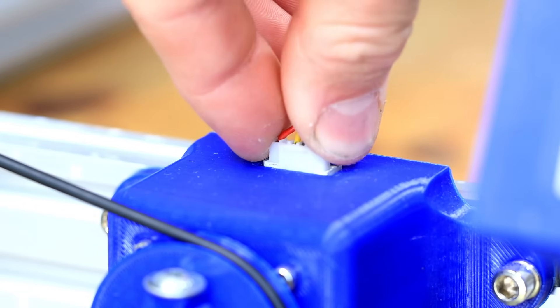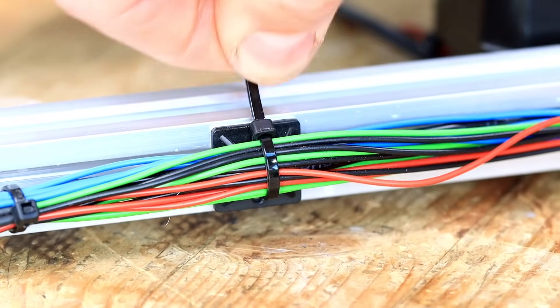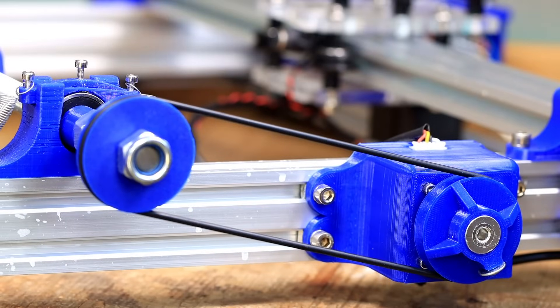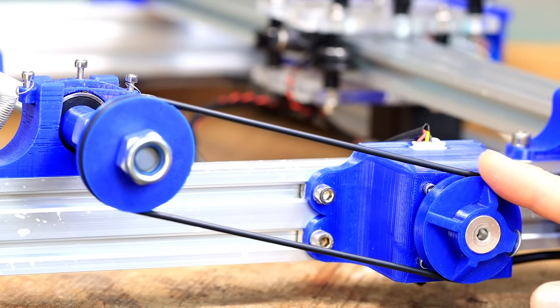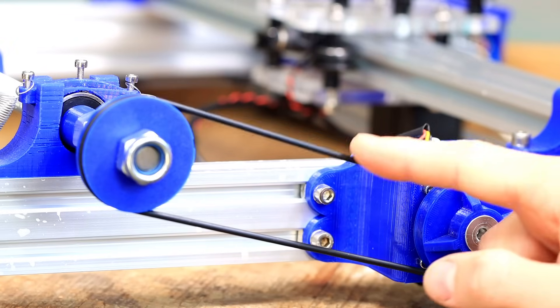After everything was assembled, finally I need to wire everything up. The tube, on which the secondary coil is later wound, is rotated by a stepper motor with these belts.